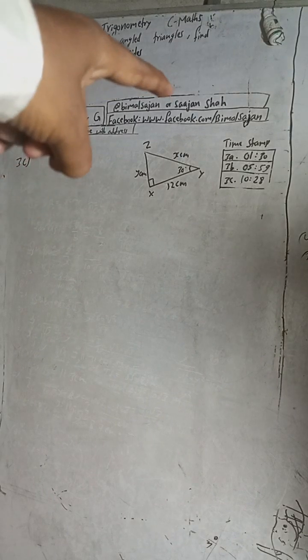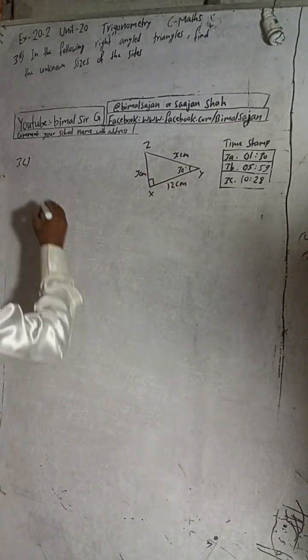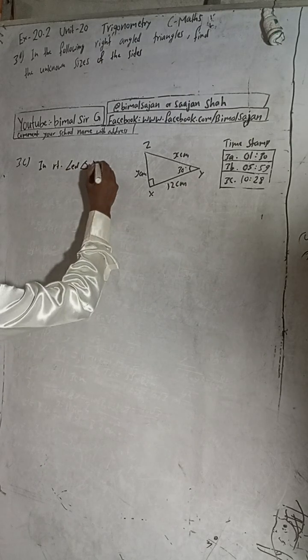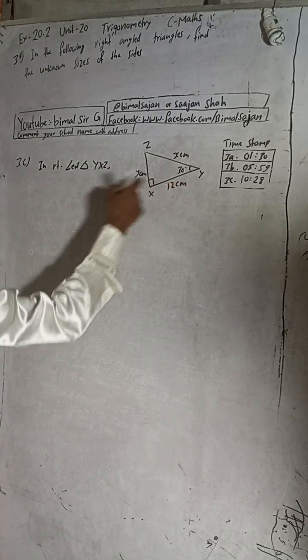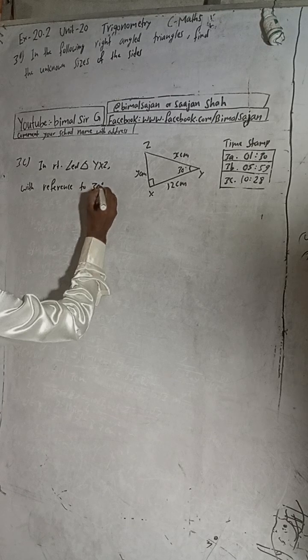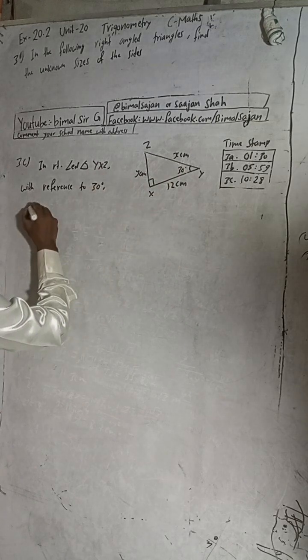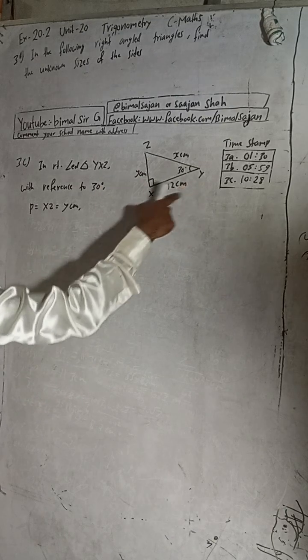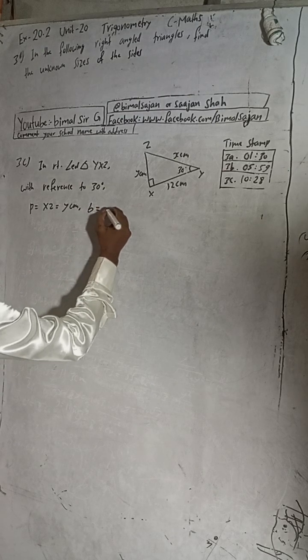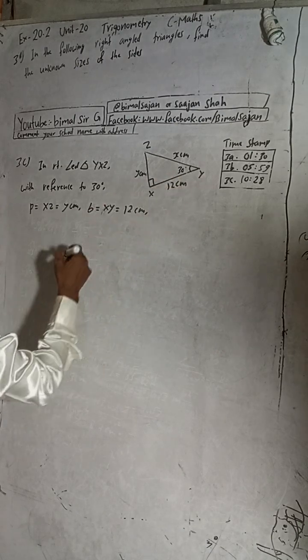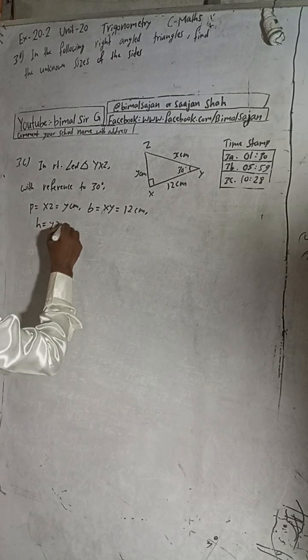This is Question 3c, timestamp 10 minutes 28 seconds. The figure shows triangle XYZ. In right angle triangle YXZ, with reference to angle theta (30°), the perpendicular is XZ = y cm, the base XY = 2l cm, and the hypotenuse YZ = x.